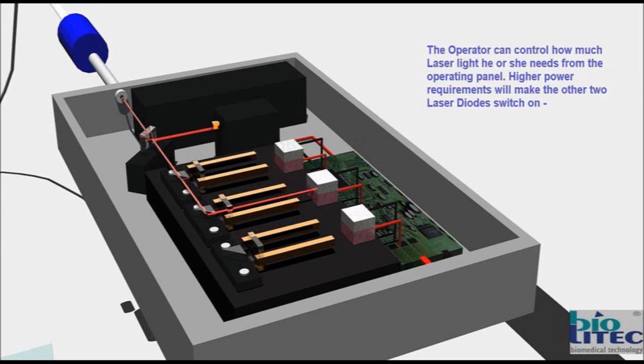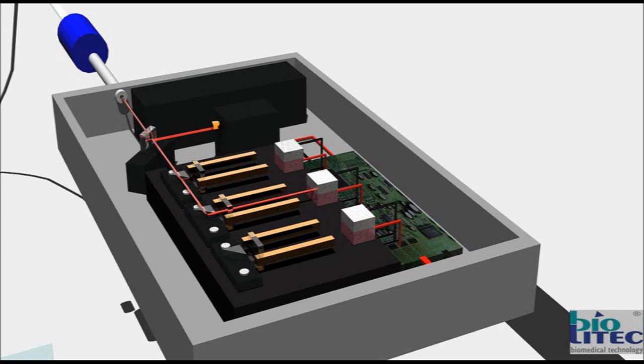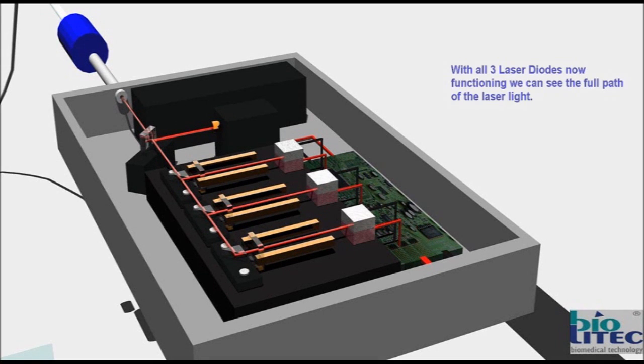The operator can control how much laser light he or she needs from the operating panel. Higher power requirements will make the other two laser diodes switch on. With all three laser diodes now functioning, we can see the full path of the laser light.